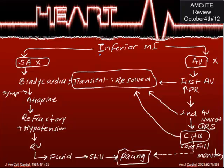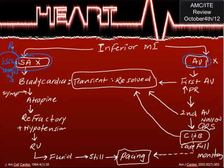For inferior MI, there may be a problem with the SA node or with the AV node. If the SA node is affected, the patient will have sinus bradycardia — common in about 40% of patients, usually within the first two hours. The cause is usually high vagal tone or ischemia, specifically right coronary artery ischemia.